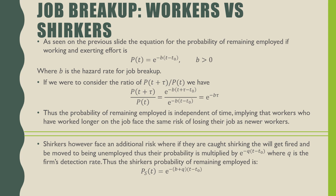It should be noted, however, that shirkers face an additional risk: if they're caught shirking, they'll get fired and move to being unemployed. Thus, their probability of staying employed is multiplied by e raised to the power of q times (t minus t-naught), where q is the firm's detection rate. So shirkers' probability of remaining employed is e raised to the power of negative (b plus q) times (t minus t-naught).